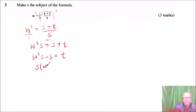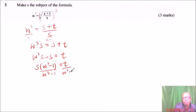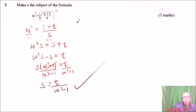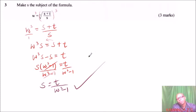Divide both sides by (W cubed minus 1), so S equals T divided by (W cubed minus 1). That is how you make S the subject of this formula. You covered this in form three under the topic 'Formulae and Variation'.